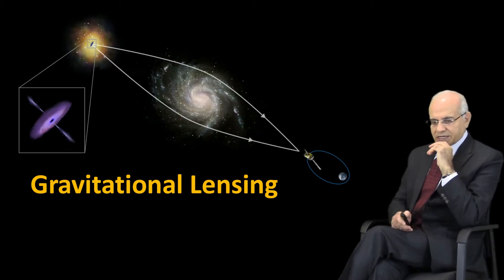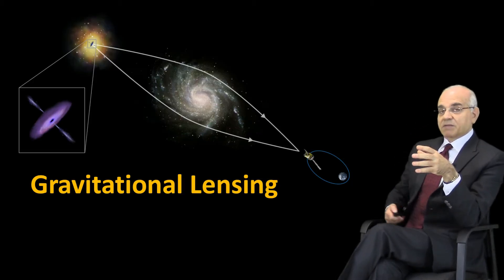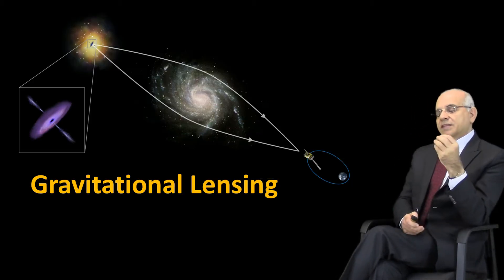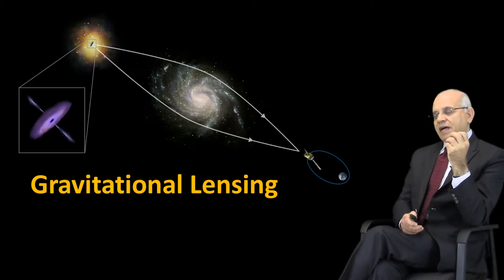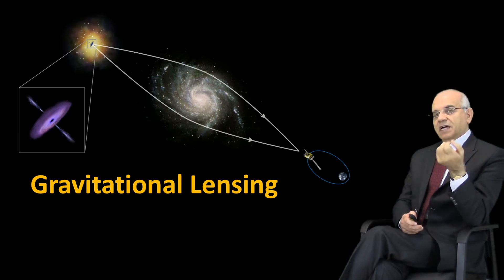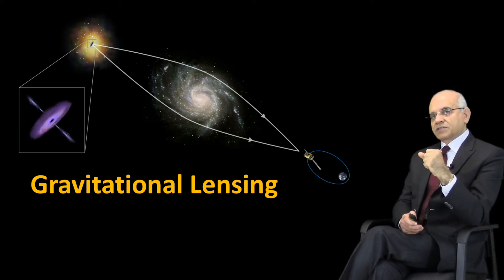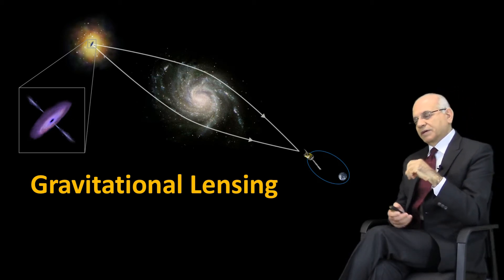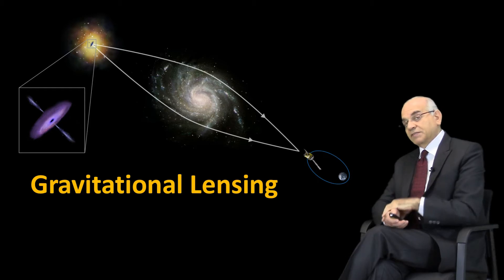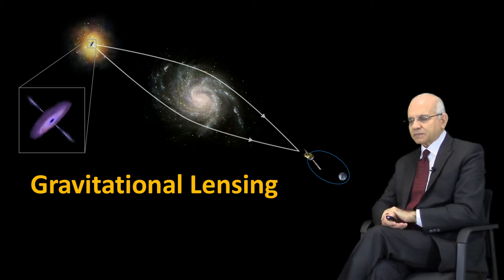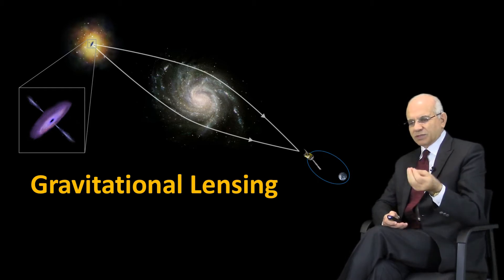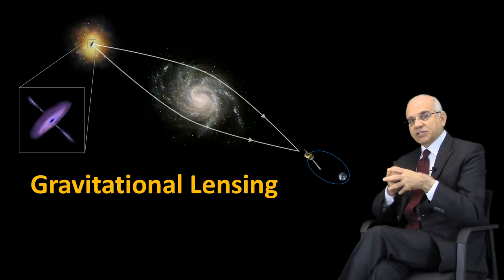We've discussed repeatedly before that Einstein predicted many things a hundred years ago when he came up with his theory of relativity. And I'm going to tell you briefly about gravitational lensing.